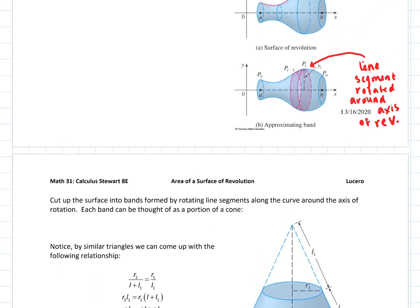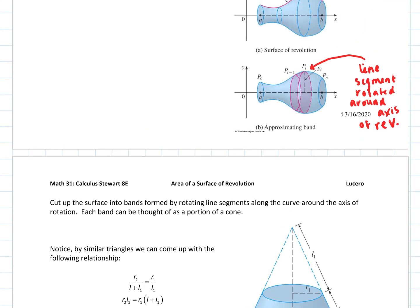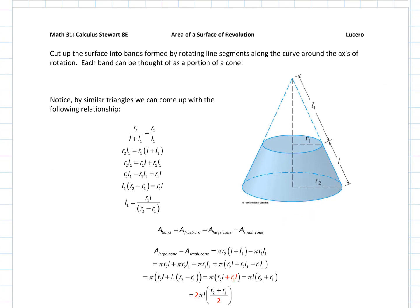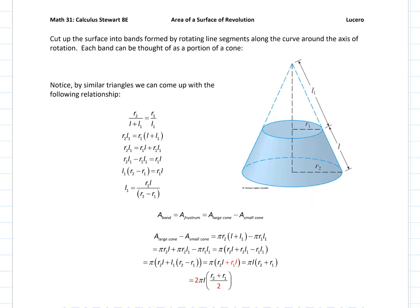If you think back to that band — if I were to take that band and put it on the table, what I'd get is the bottom part of a cone. We actually think of each of those bands as a portion of a cone. The larger cone has a radius R2 and the top cone has a radius R1. The actual length of the band is L, and the slant height of the top cone is L1. Although the top cone doesn't actually exist — that's why it's in dashes — we need it to talk about the surface area of a cone.